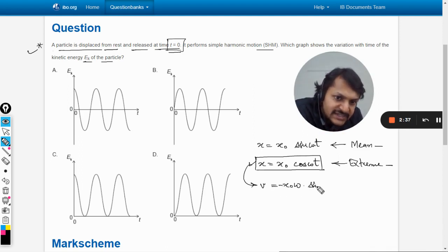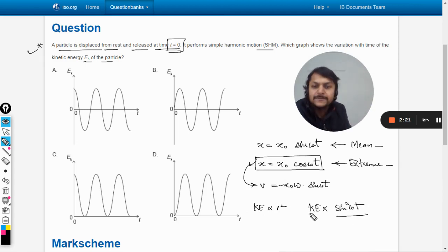When you differentiate it, it becomes negative x naught omega sine omega t. This is the function for the corresponding velocity. We know that kinetic energy is directly proportional to v squared, so kinetic energy will be directly proportional to sine squared omega t. We have to first create the graph of negative sine omega t, then square it, and then see which is the correct answer.